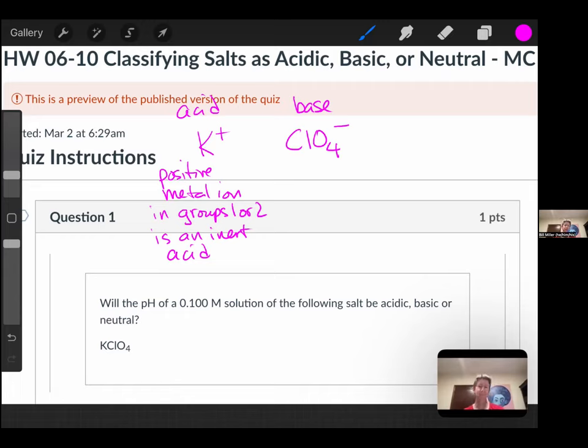Sometimes I tend to prefer the word inert. Inert means do nothing, or does nothing. Some professors call that very weak as well. Basically weaker than H2O, unable to make H2O create any hydroniums or hydrogen ions. So no effect on pH.